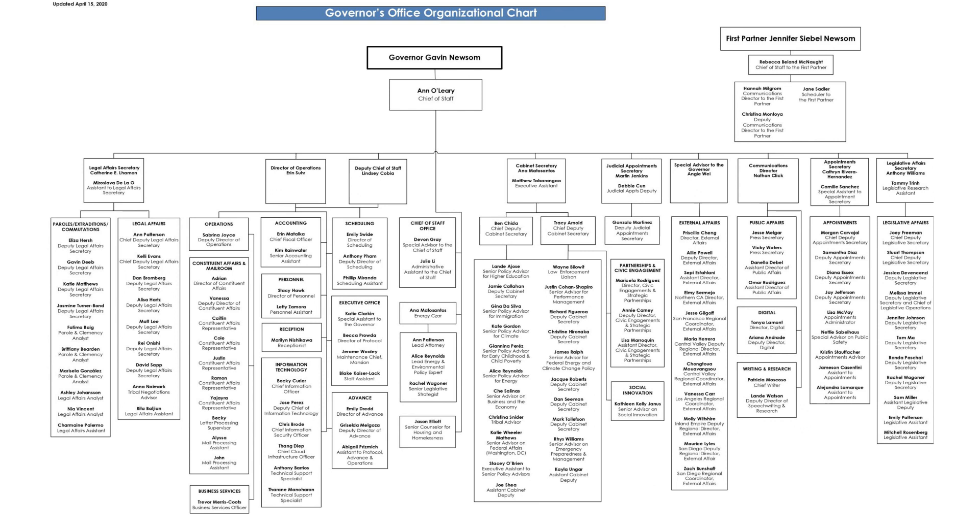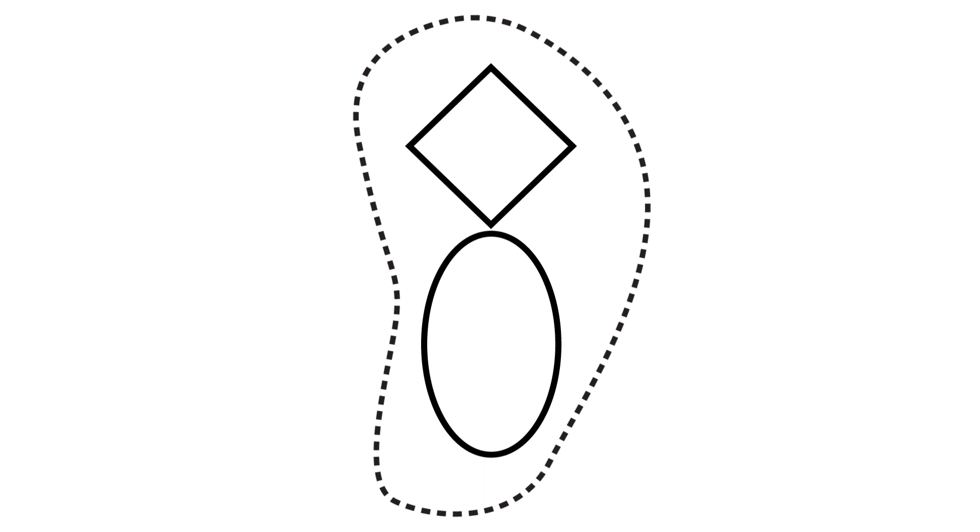The chain of command often winds up becoming less a way of understanding the actual functioning of a system and more a roadmap for who gets blamed for what. Beer recognized that hierarchy obstructs productivity and freedom. So he created the viable systems model in part to model a system that balanced autonomy with cohesion.